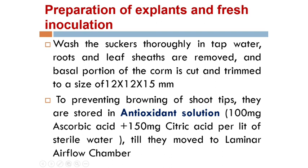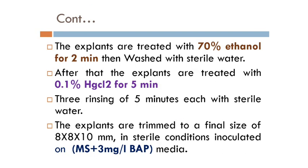Preparation of explant and fresh inoculation: Wash the suckers thoroughly in tap water. Roots and leaf sheaths are removed, and the basal portion of the corm is cut and trimmed to a size of 12×12×15 mm. The explants are then treated with 70% ethanol for 2 minutes, washed with sterile distilled water, then treated with 0.1% mercuric chloride for 5 minutes, followed by 3 rinsings of 5 minutes each with sterile distilled water. This is the surface sterilization procedure for banana. The explants are trimmed to a final size of 8×8×10 mm.